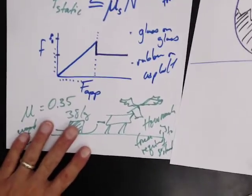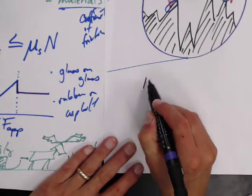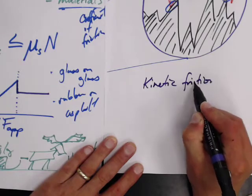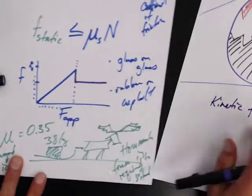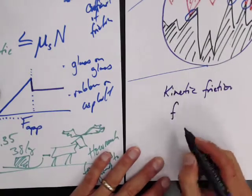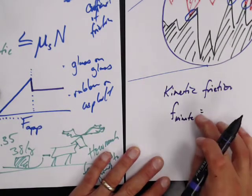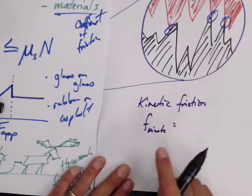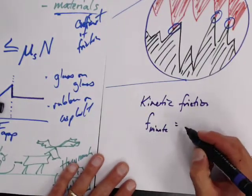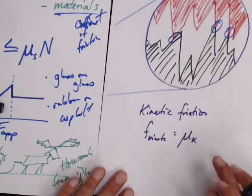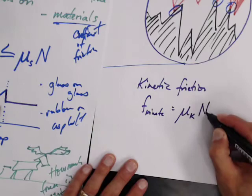So now I've switched situations, and now I'm in a kinetic friction situation. And because it's constant, the force of kinetic friction is equal to the coefficient of kinetic friction between these two materials times the normal force.